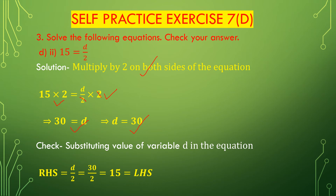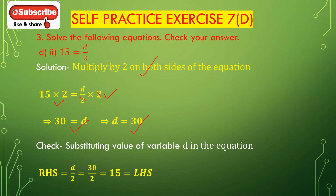Now we check D = 30 in this equation, whether left hand side equals right hand side. Substituting D = 30 on the right hand side: D/2 = 30/2 = 15, which is equal to the left hand side. So this equation is satisfied for D = 30. The value of the variable D is 30.